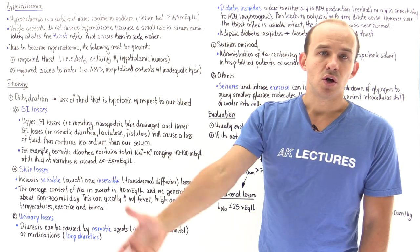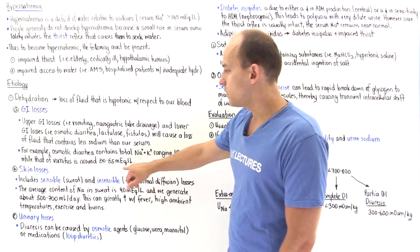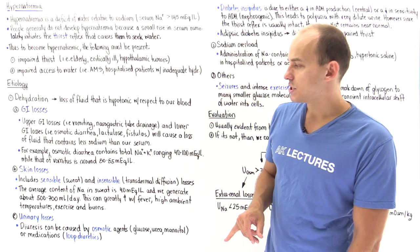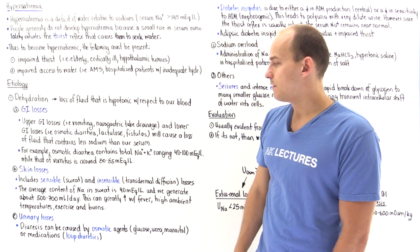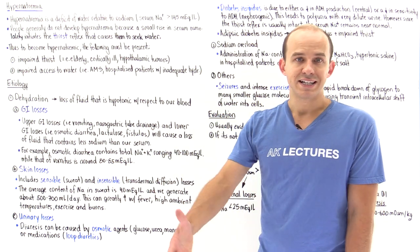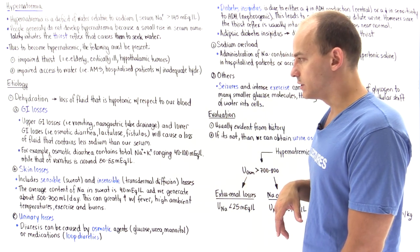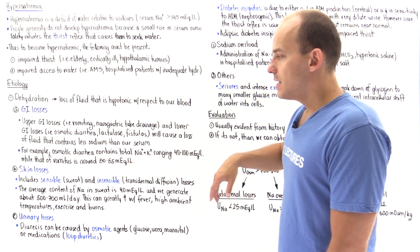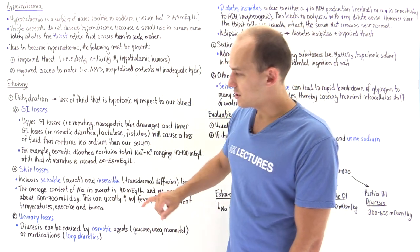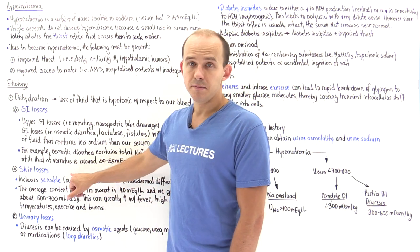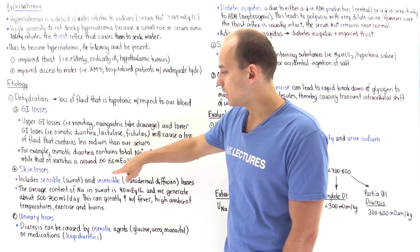Vomitus is also hypotonic. On average, the sodium plus potassium in vomitus is between 50 to 55 milliequivalents per liter — lower than blood — so we're losing hypotonic fluid. We can also have sensible skin losses, which basically means sweating, which is also hypotonic with respect to our blood.